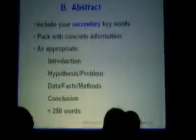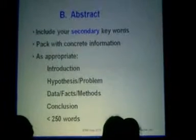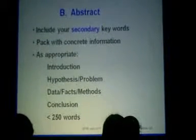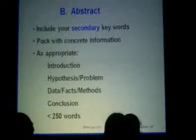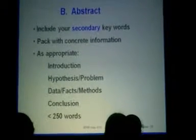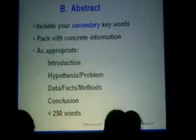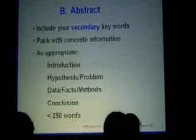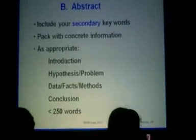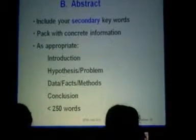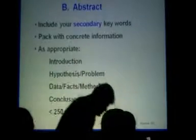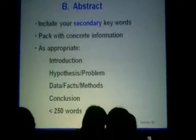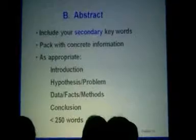Abstract. People have multiple opinions on when to write an abstract. We write it at about any time, but at the very end we go back over it word for word and make sure it fits what we finally wrote in the paper. In the abstract, we include those secondary keywords — the ones that didn't make it into the title — to make sure that literature searches can pop your paper up to potentially interested readers. Try to pack it with concrete information, because the title and abstract are your billboard to the world.